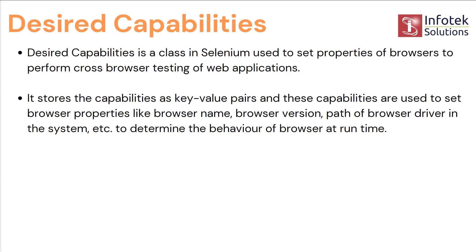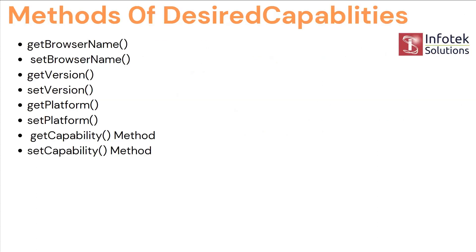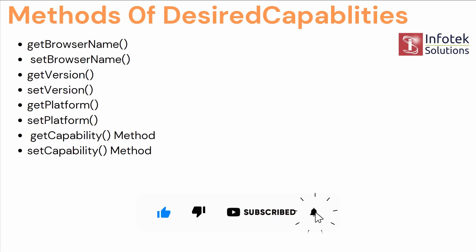Chrome Options and Desired Capabilities are two things that usually work alongside the drivers. With Chrome Options, we add options, extensions, and information we want to add to our web page. With Desired Capabilities, we add information related to the browsers and the system. The methods in Desired Capabilities include getBrowserName, getVersion, setVersion, setBrowserName, getPlatform, setPlatform, getCapabilities, and setCapabilities — all in the form of getters and setters.